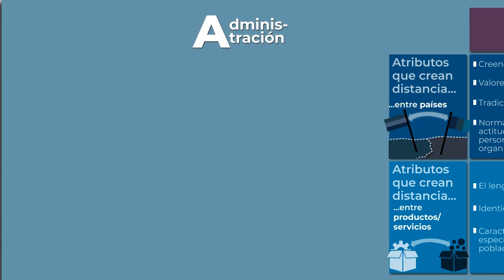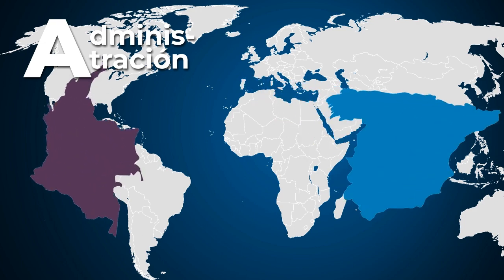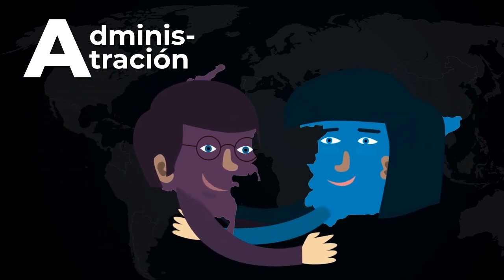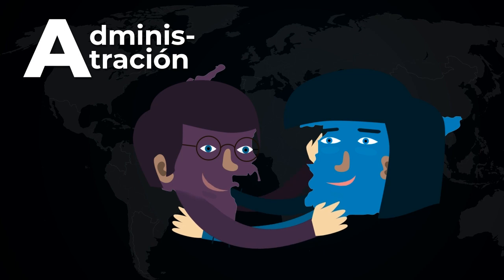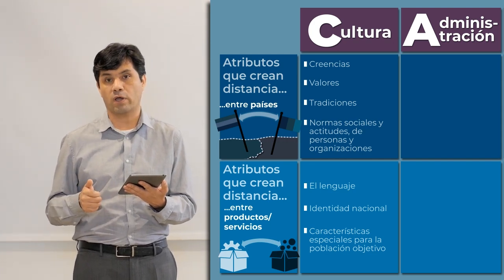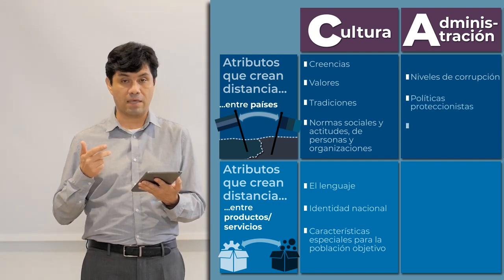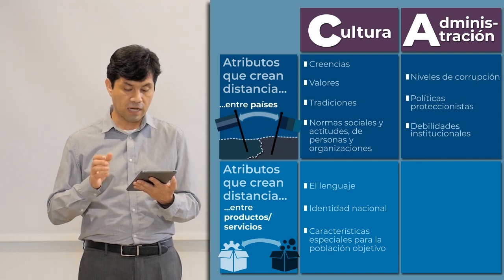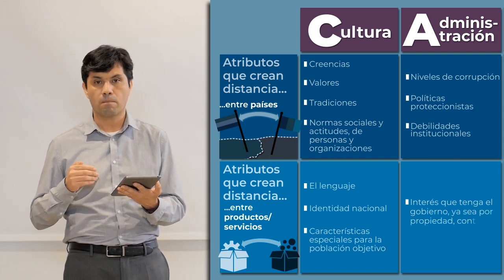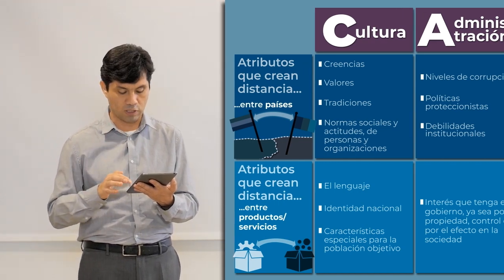En el análisis de administración, ya pasando a la segunda columna, se tienen en cuenta los vínculos políticos e históricos entre los países que ya se establecen entre relaciones. Esto dificulta o facilita las relaciones comerciales. Asimismo, pueden existir atributos de tipo administrativo, como los niveles de corrupción, las políticas proteccionistas y la debilidad institucional. Esto cuando relacionamos países. Pero cuando relacionamos industrias, dependerá más del interés que tenga el gobierno, ya sea por priorizar el control de las empresas o por el efecto en la sociedad, cómo esas industrias van a afectar.